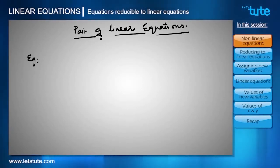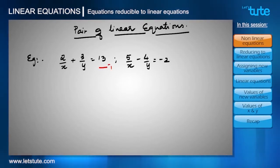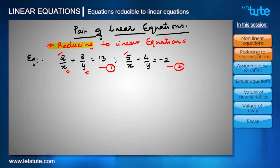For example, let's say I am having these two equations. Let's take them as equation number 1 and equation number 2. If you see, the variables are in the denominator, so it is clear that they are not linear equations. So first of all, we have to do some adjustment and we have to reduce these two equations into linear equations. Therefore, we can call this concept as reducing to linear equations.